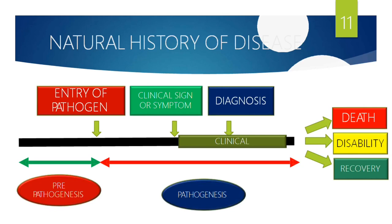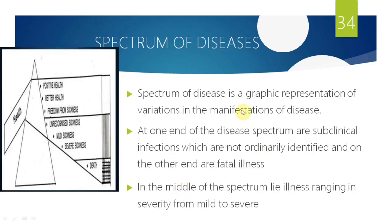Studying natural history of disease is very important in disease prevention — understanding how disease progresses without any medical treatment or intervention, and how it produces death, disability, or recovery. Next is the spectrum of disease — almost related to natural history. Spectrum of disease is a graphic representation of variations in the manifestation of disease, named like the spectrum of light passing through a prism radiating many colors.